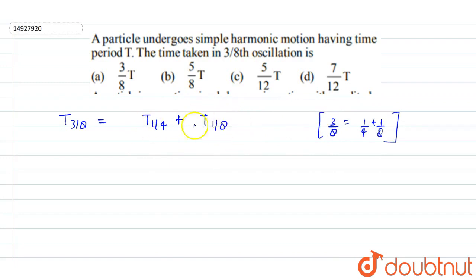We know that time for 1/4 oscillation will be equal to T/4. Now we need to find out time taken for 1/8 oscillations.